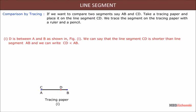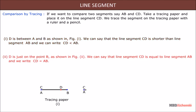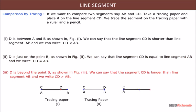Second, if D is just on point B as shown in figure two, we can say that line segment CD is equal to line segment AB, and we write CD = AB. Third, if D is beyond point B as shown in figure three, we say that segment CD is longer than line segment AB, and we write CD > AB.